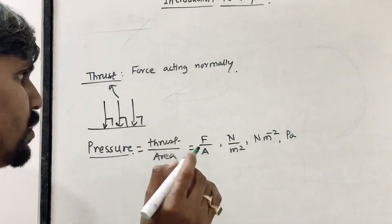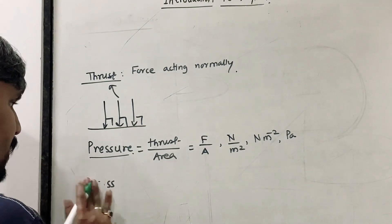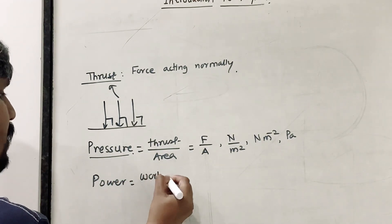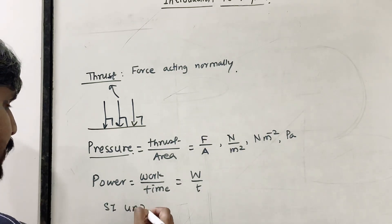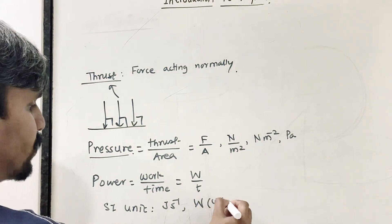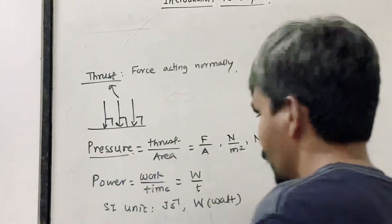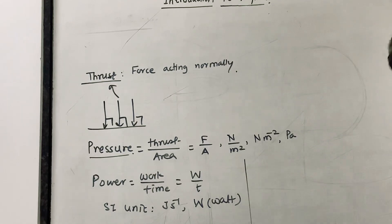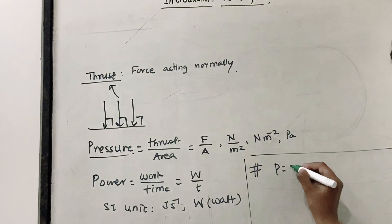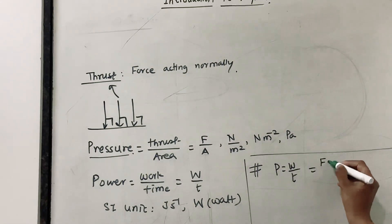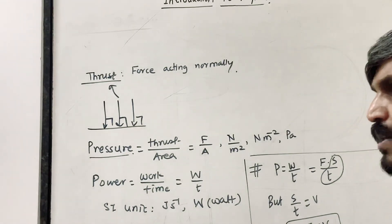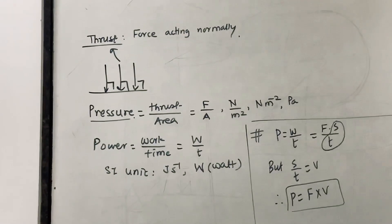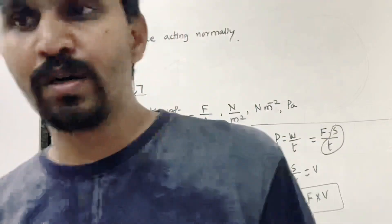Power is work divided by time. Its SI unit is Joule per second, which is called Watt (W). Power can also be expressed as force times velocity, since work equals force times displacement, and displacement divided by time is velocity. Therefore, power equals force times velocity, and the SI unit can also be written as Newton meter per second.